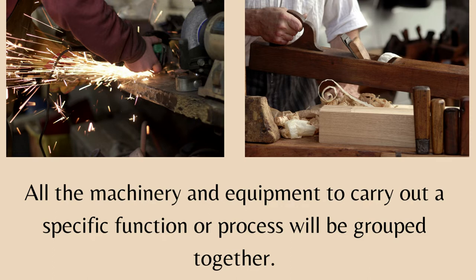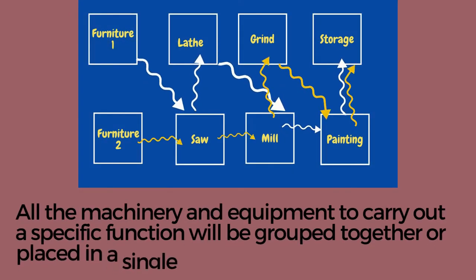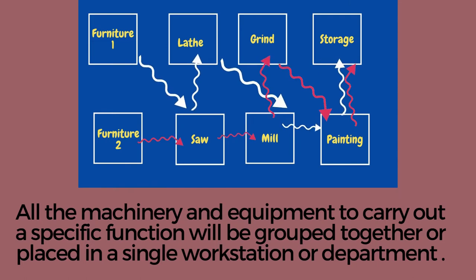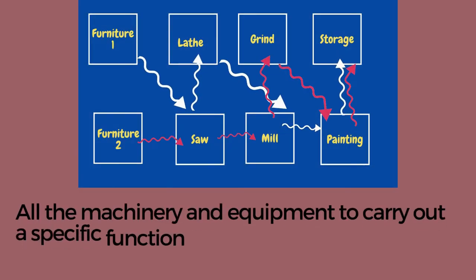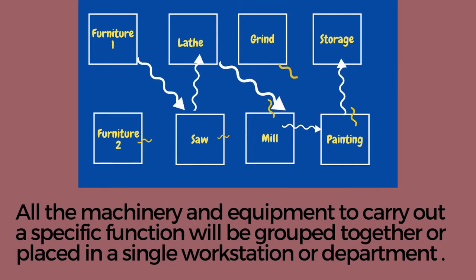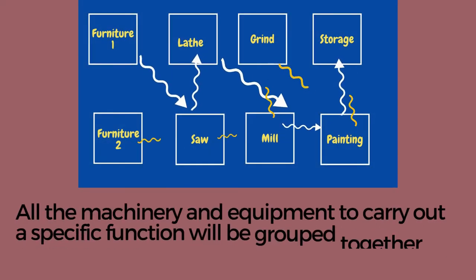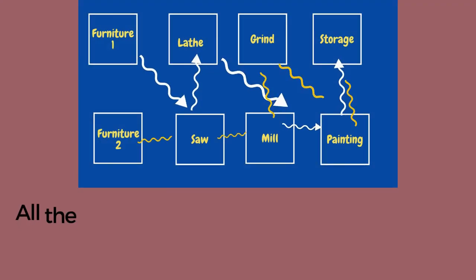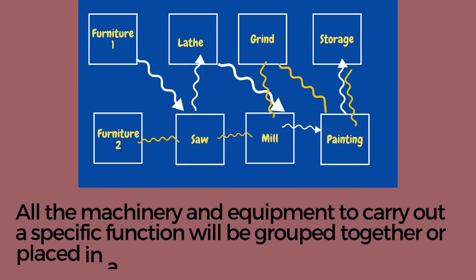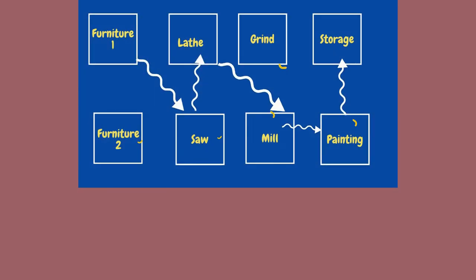This type of strategy is used to process items or provide services that involve a variety of processing requirements. For example, let's say we have two types of furniture to be made. The first furniture — you'll saw it, mill it, paint it, and then store it. However, the second furniture may not go through the same process; it may go to saw, mill, grind, paint, and then store. They are treated differently based on their process. For sawing, you'll find that in one workstation; for milling, you'll find that in another workstation. That is the process layout strategy.